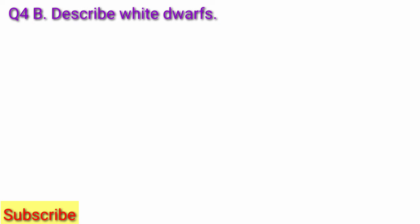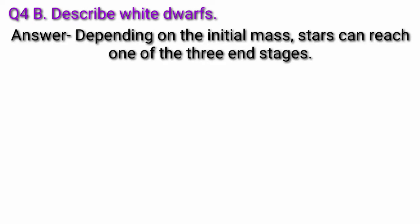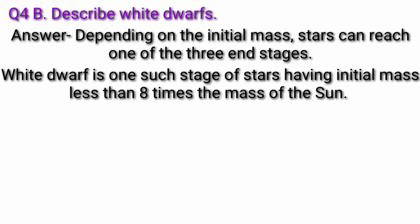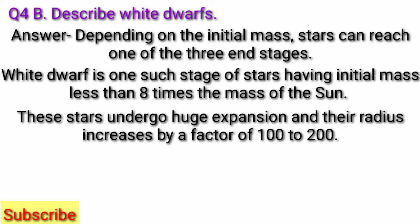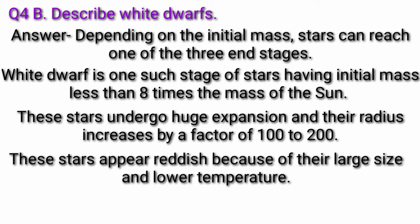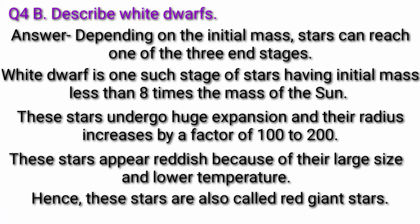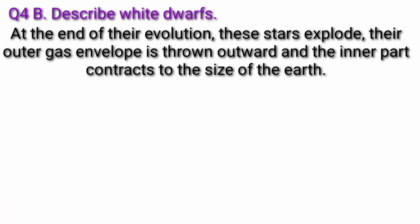Now, question B. Describe white dwarfs. Answer, depending on the initial mass, stars can reach one of the three end stages. White dwarf is one such stage of stars, having initial mass less than 8 times the mass of the sun. These stars undergo huge expansion and their radius increases by a factor of 100 to 200. These stars appear reddish because of their large size and lower temperature. Hence, these stars are also called red giant stars. At the end of their evolution, these stars explode.